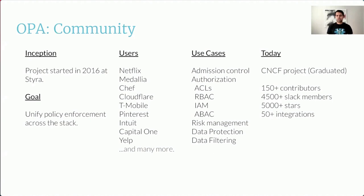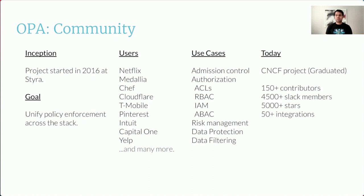The OPA project was started in 2016 at Styra, and the goal of the project has been to unify policy enforcement across the stack. One of the earliest adopters of OPA was Netflix, and they've been using OPA for authorizing their gRPC and HTTP APIs. Companies like Chef, Cloudflare, Pinterest, Intuit, Capital One, and many more are using OPA in production for use cases like admission control, RBAC, ABAC, risk management, data filtering, and so on. OPA is a graduated project at the CNCF with more than 150 contributors on GitHub, a Slack community of more than 4,500 members, starred more than 5,000 times on GitHub, and integrated with more than 50 of the most famous open source projects.